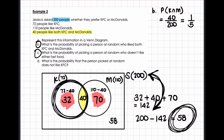Question C says: what is the probability of picking a person at random who doesn't like either fast food? That would be the probability that they don't like either fast food. That would be the 58 people that don't like either over the 200 people in total, which gives us 29 over 100 as a simplified fraction.